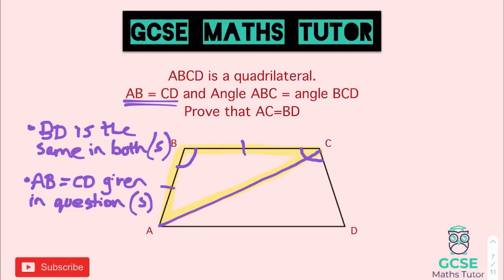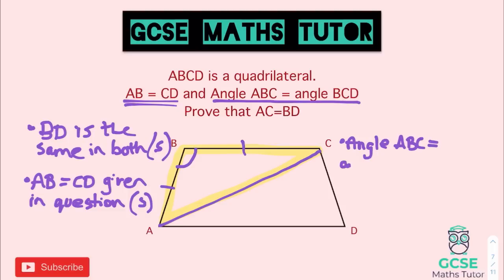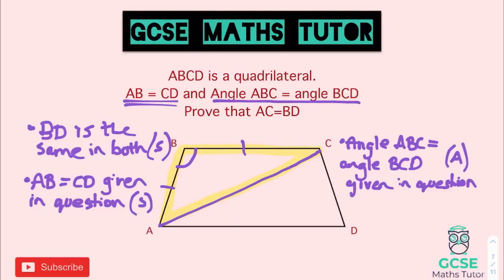Between those two sides, the angle was also given to us in the question: angle ABC is equal to angle BCD, given in the question. That is an angle. This is a nice question because a lot of information is provided directly.